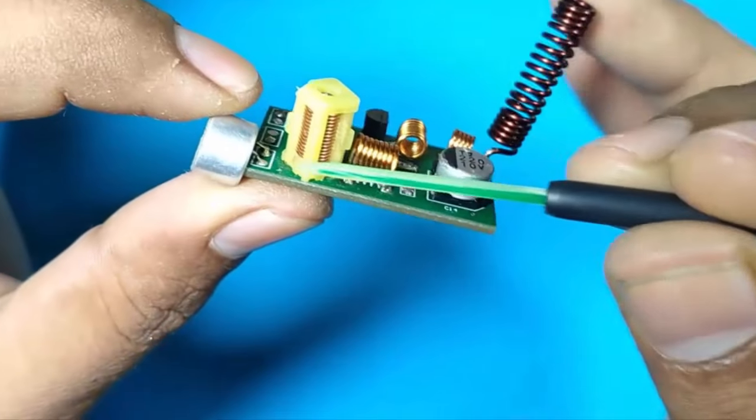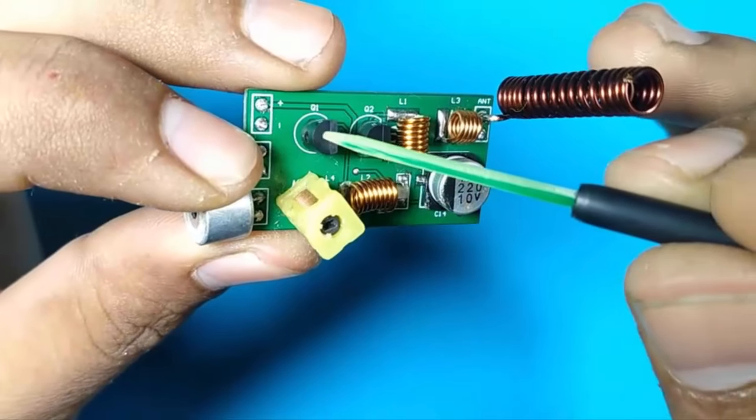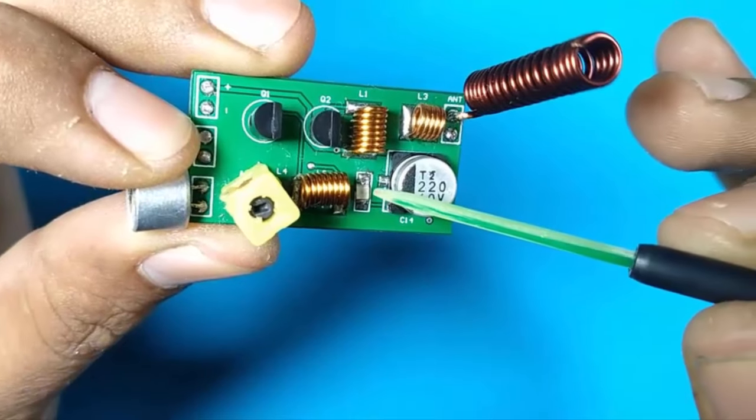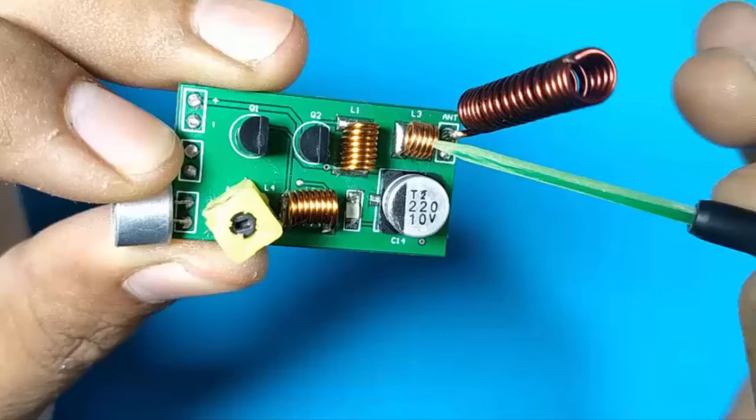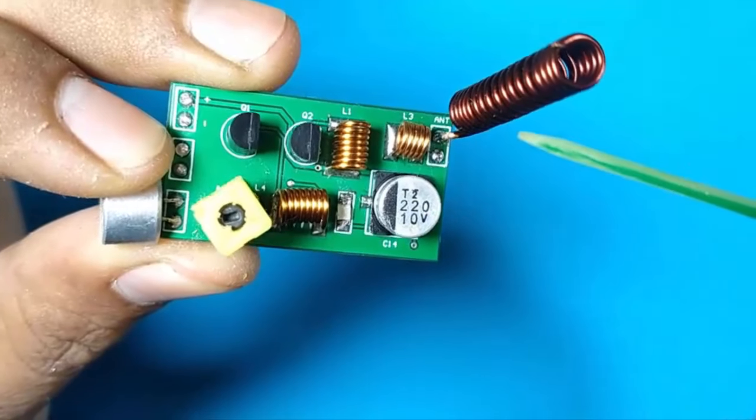This is a ferrite core variable inductor for changing frequencies. 2 transistors, 2 air core coils having 8 turns, a LED indicator, harmonic filter coil having 5 turns, a supply filter capacitor, and last coil antenna.